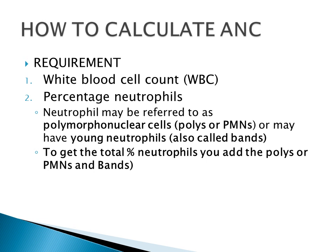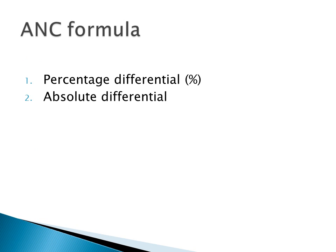To get the total, we have to add the polymorphonuclear cells and the bands. There are two formulas that can be used to calculate the absolute neutrophil count. The most common one is called the percentage differentiation.